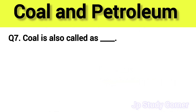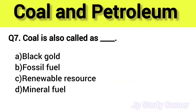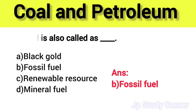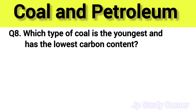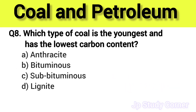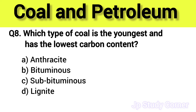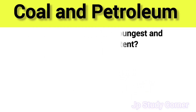Question number seven: coal is also called as dash. The right answer is option B — fossil fuel. Question number eight: which type of coal is the youngest and has the lowest carbon content? The right answer is option D — lignite.